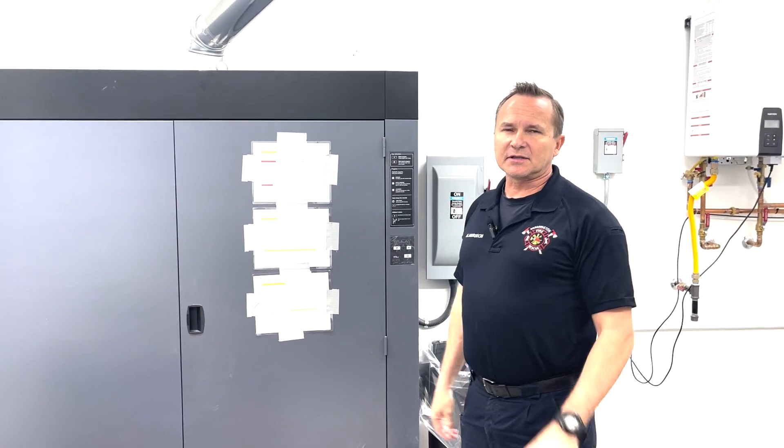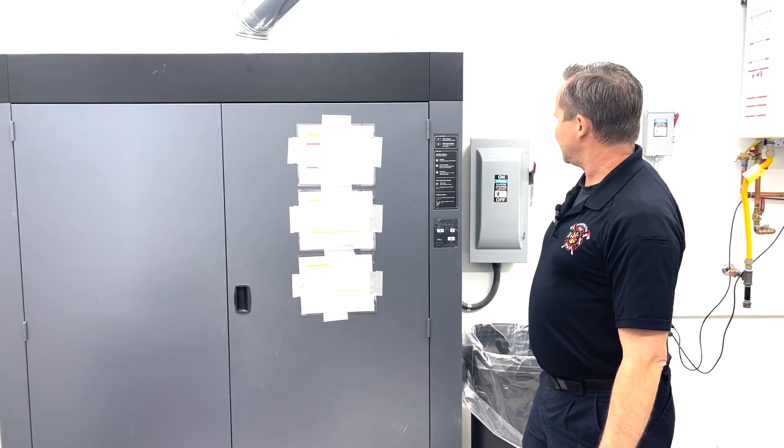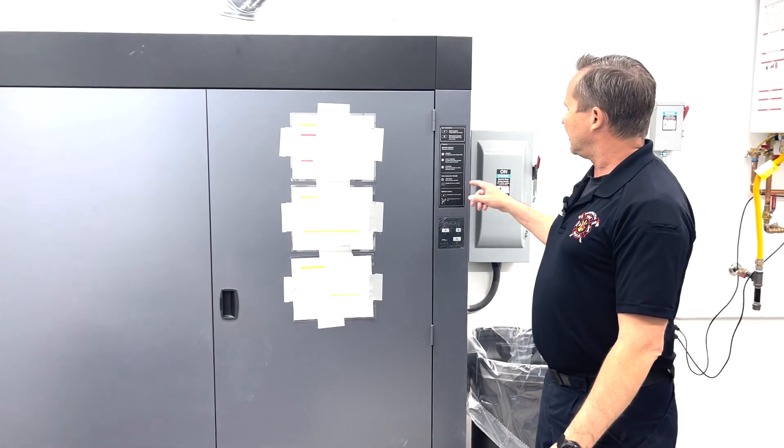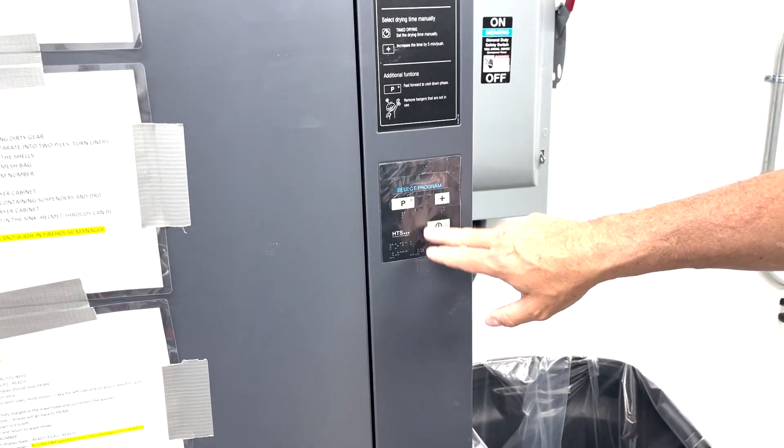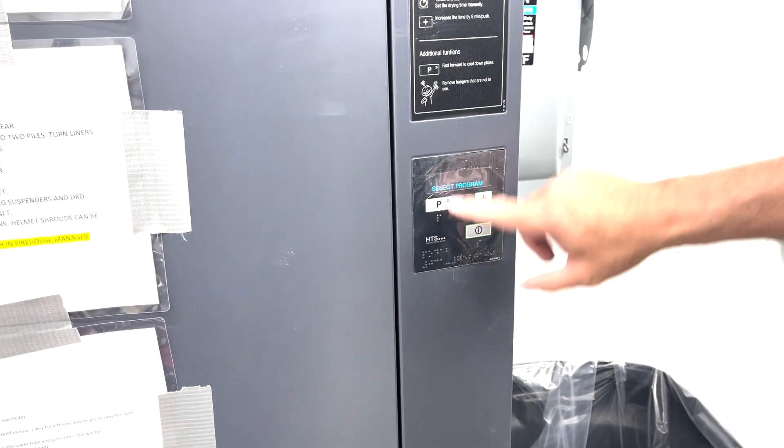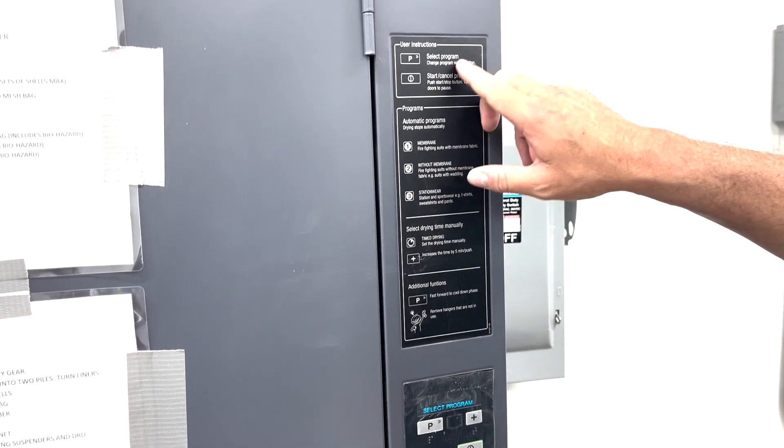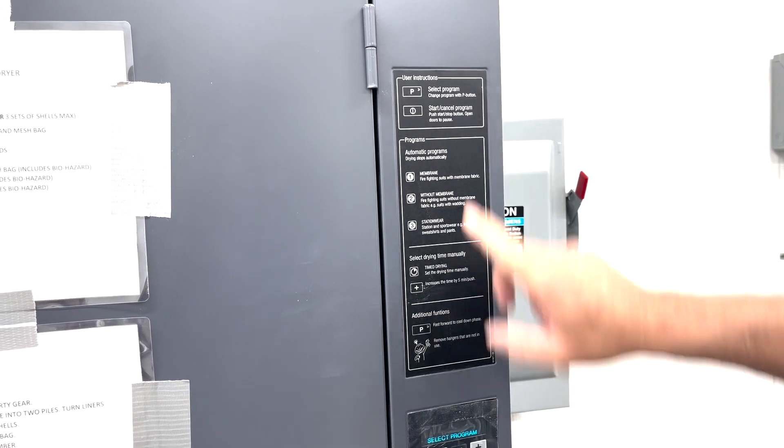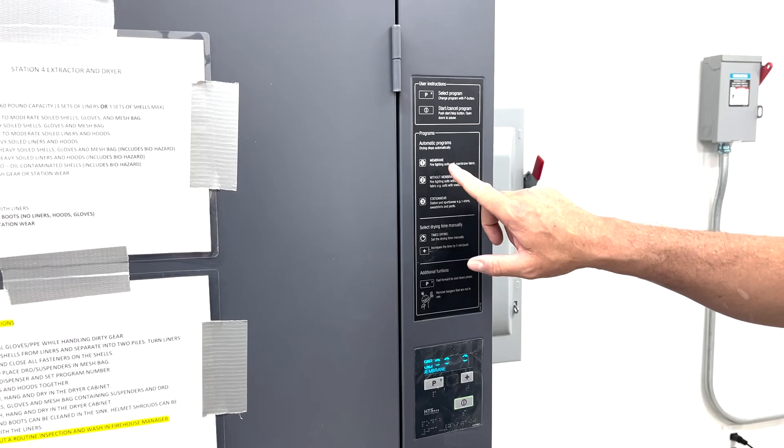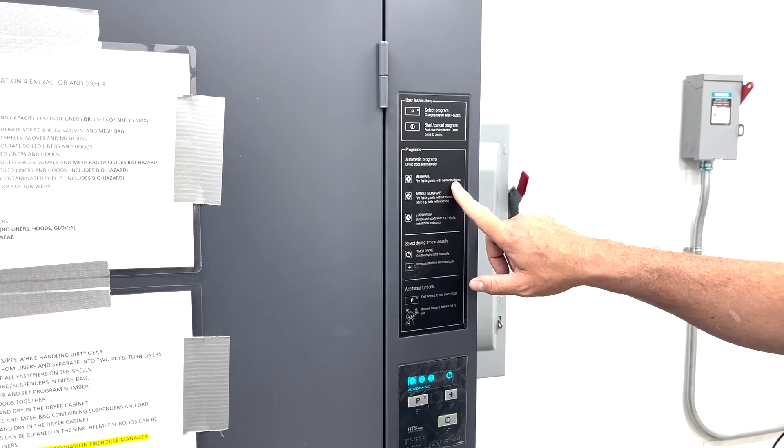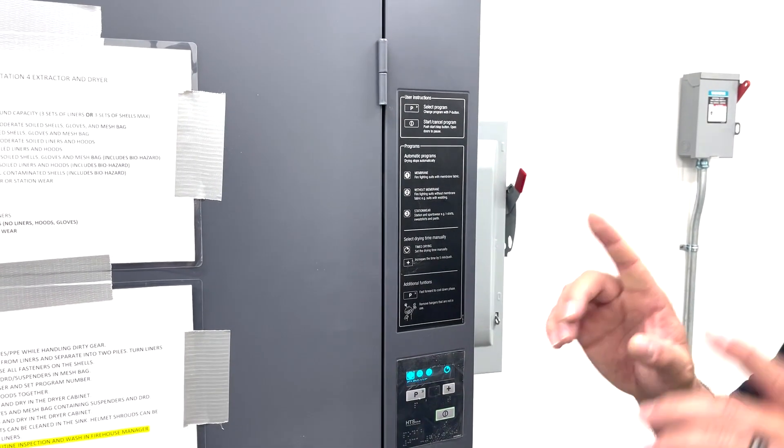This is the Station 4 dryer. It's a little bit different than the ones at the other stations. This one's pretty simple. You turn it on if it's not already, and it says 'Select Program.' You hit the P button. It says up here, and all the instructions are up here: 'Select the program. Change the program with the P button.'